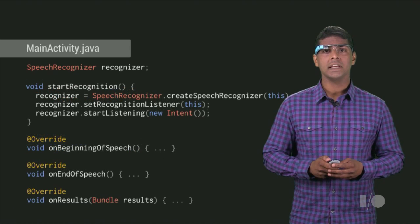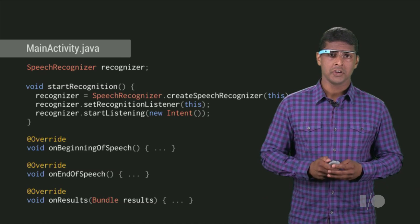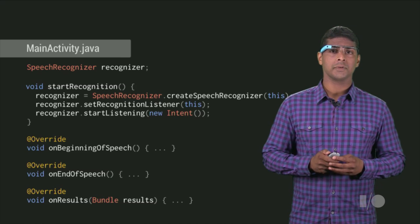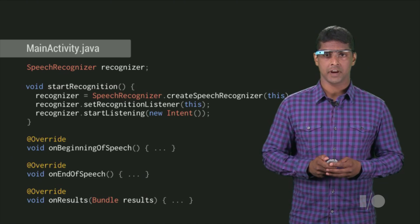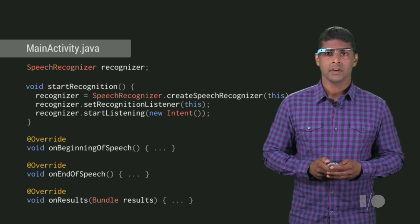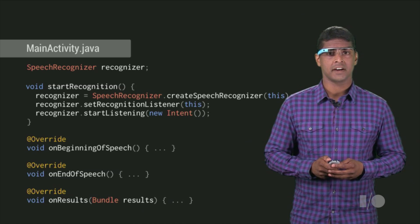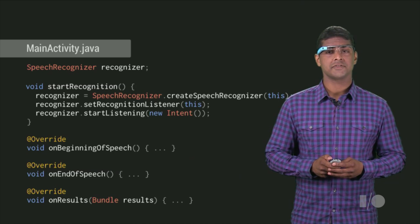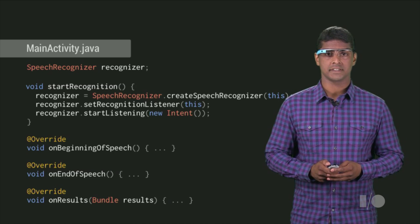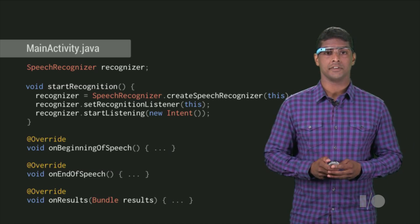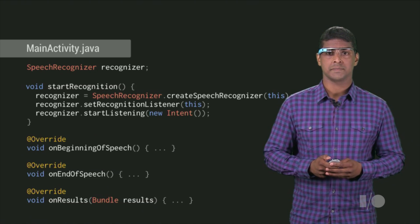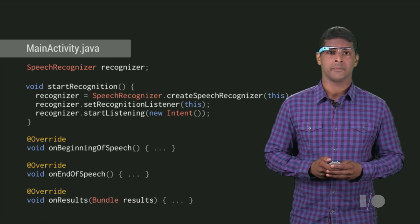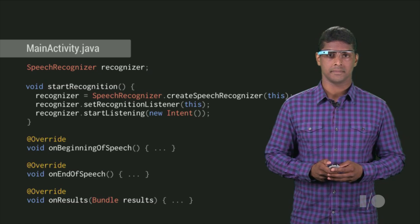If you want even more control over voice input, you can work directly with the Voice Recognition Service via the SpeechRecognizer API. Your Glassware can define a RecognitionListener that will receive transcription results in real-time while the user is speaking. Here, MainActivity creates a SpeechRecognizer and implements some of the callback methods of RecognitionListener.